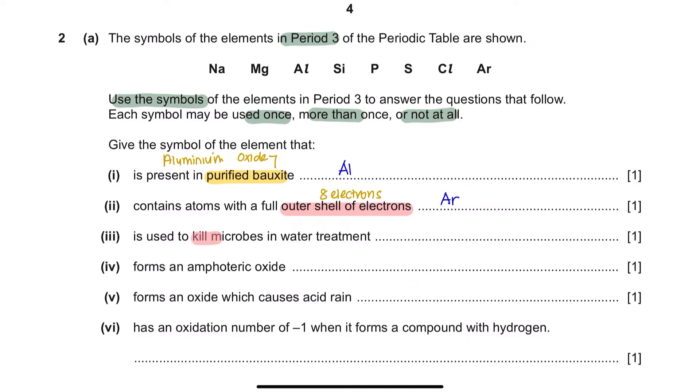Part 3. Is used to kill microbes in water treatment. That would be chlorine. Part 4. Forms an amphoteric oxide. Amphoteric elements are able to react both as a base and acid. Some of the elements which forms amphoteric oxide are aluminium and zinc. So, the answer here would be aluminium.